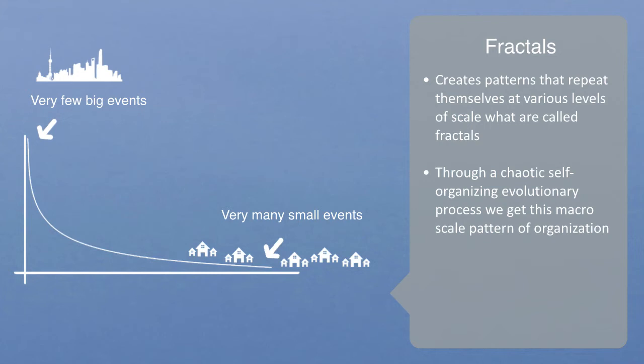This fractal structure is a very economical way, to create a macro scale pattern, through iteration of some simple rule, we get the same structure on the micro level, and the macro level, that gives the system scale invariance.